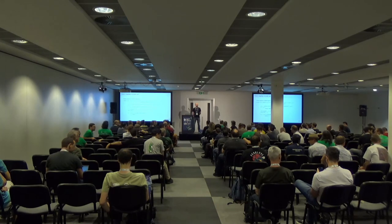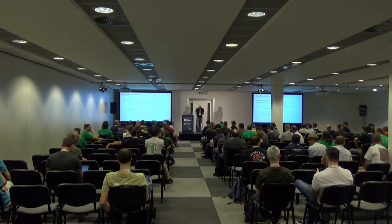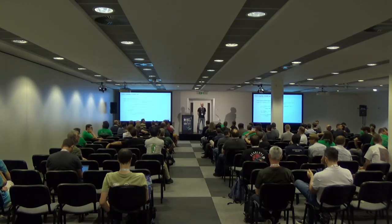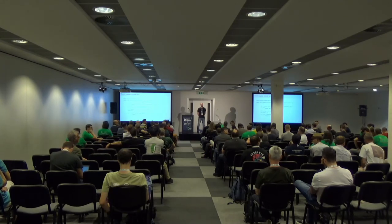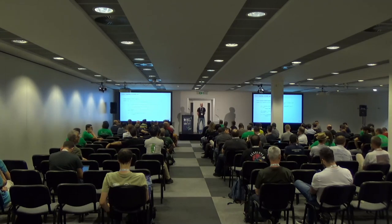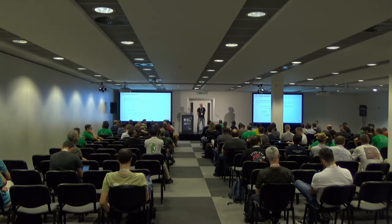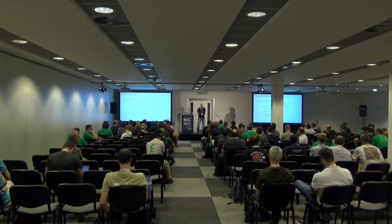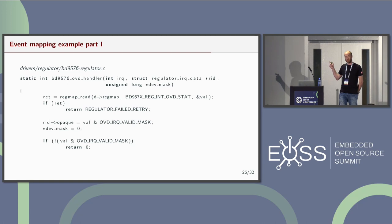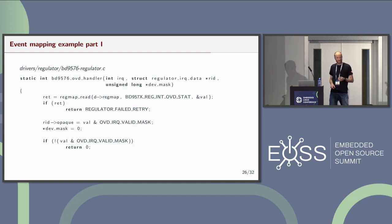An audience member provides a real use case: in automotive, under-voltage events are common. When under-voltage occurs, you should execute as little as possible to prepare for power loss — for example, preparing the eMMC to be disabled soon to avoid damage. The speaker finds this useful because when they first implemented safety features in a PMIC intended for automotive use, there was a customer request for these features, but they never heard the specific use case. This makes sense now.